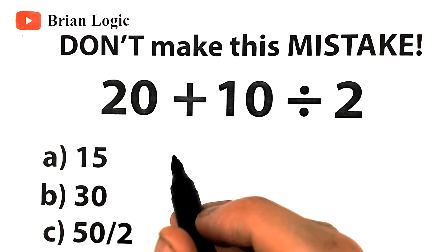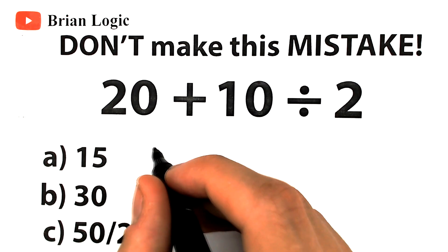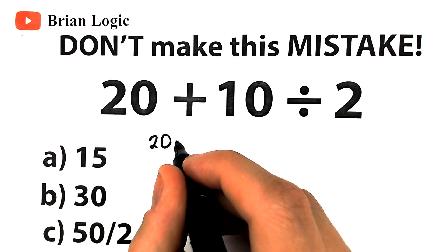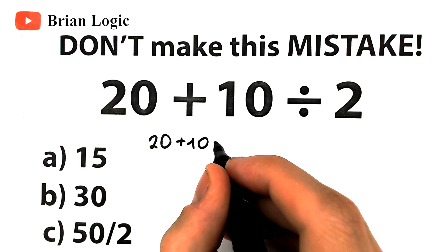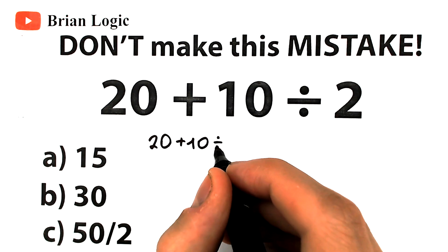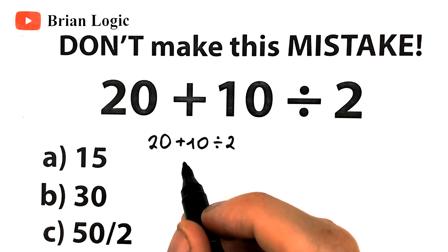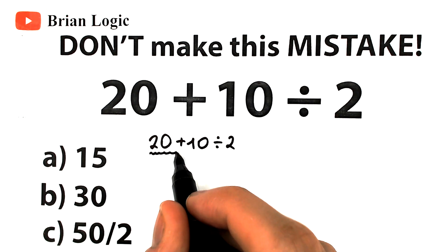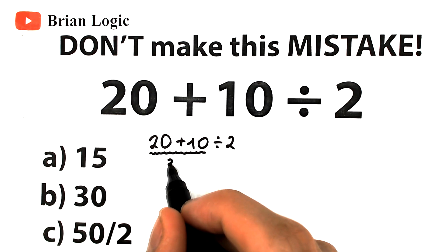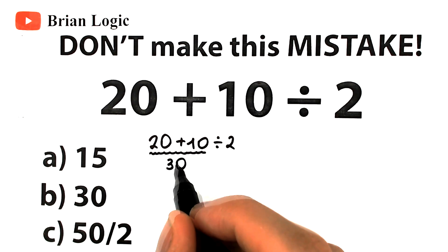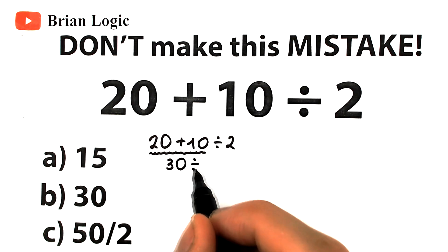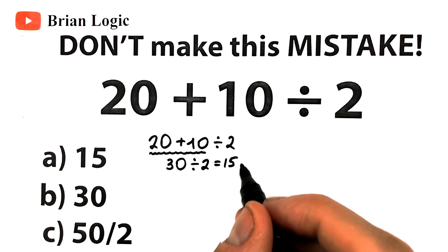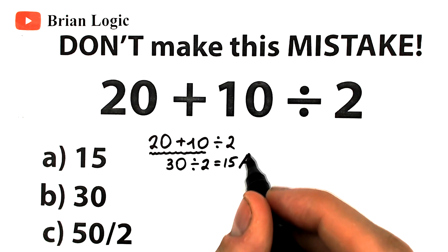This is a very tricky question. There are two types of students. The first type of students solve this question like that — take a look closely. We have 20, plus 10, divided by 2. They don't know enough math and they start with the addition. So 20 plus 10 equals 30, and then divided by 2 equals 15. That is option A.